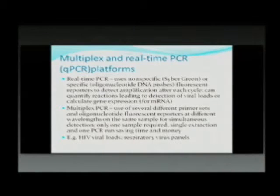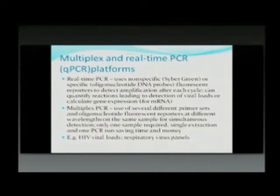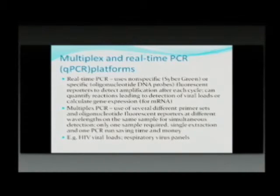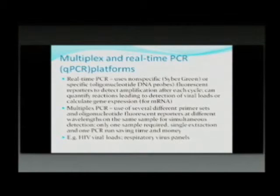Multiplex PCR uses different kinds of primer sets. Instead of using just one fluorophore, you can detect several organisms or infections in a single reaction. The great advantage is that you only have to extract the sample once — instead of five different reaction tubes, you have just one reaction tube detecting several organisms from one sample. Real-time PCR is typically used for HIV viral loads, while multiplex PCR is used for respiratory virus panels.